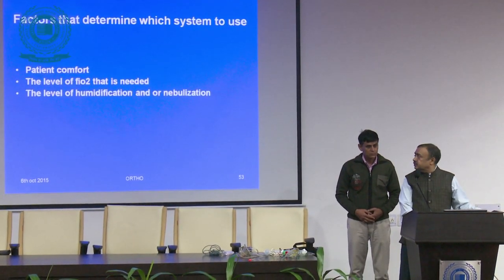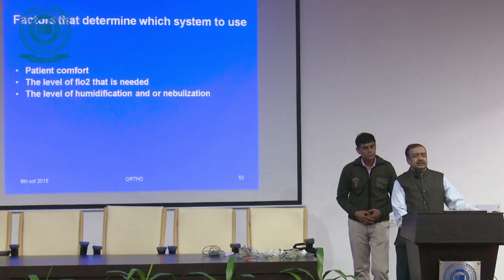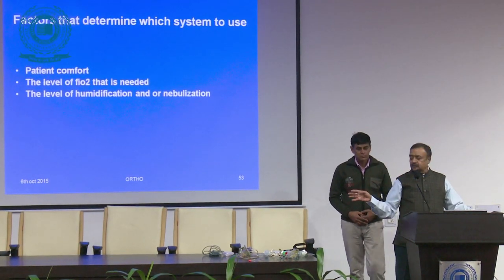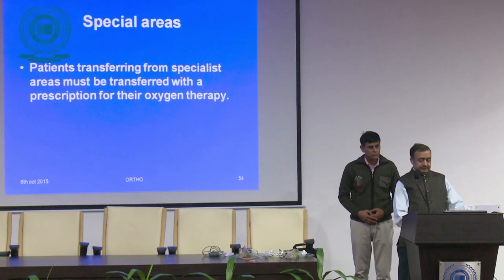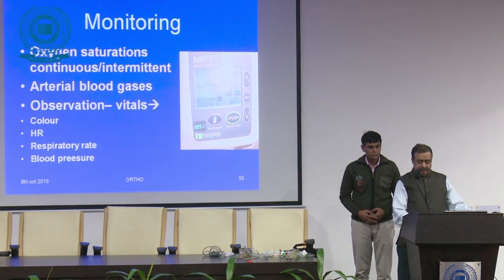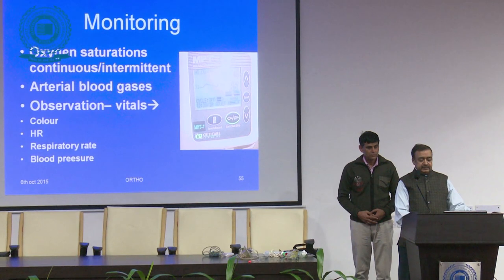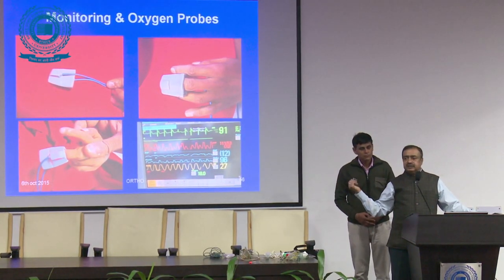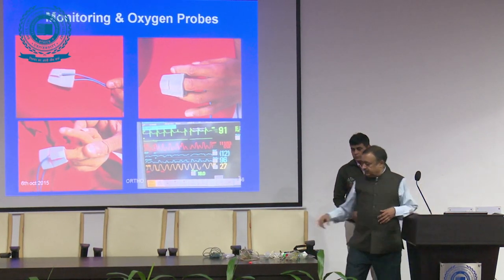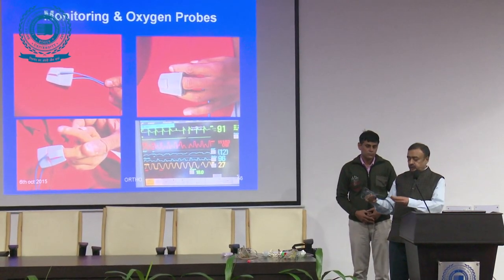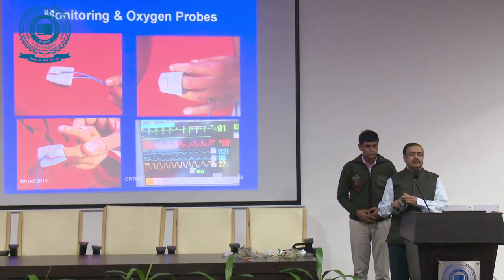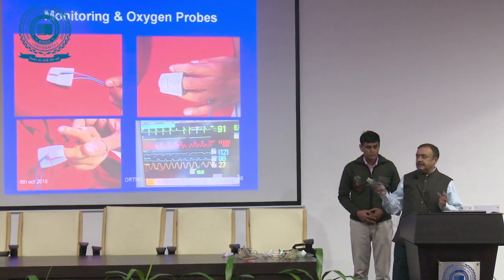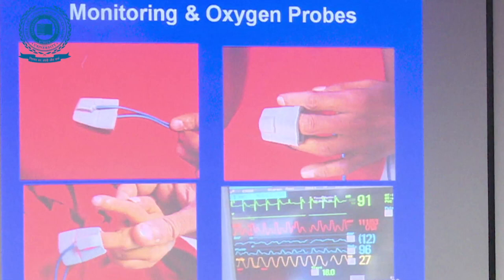Device selection depends on patient requirements. For a casualty patient, a nasal cannula or simple mask is usually sufficient initially. Once oxygen therapy is started, monitoring is done with a pulse oximeter — a probe placed on any finger of the patient, provided there is no nail polish and circulation is adequate. The pulse oximeter gives the oxygen saturation value; if blood pressure is low or circulation is poor, it may not pick up a reading.